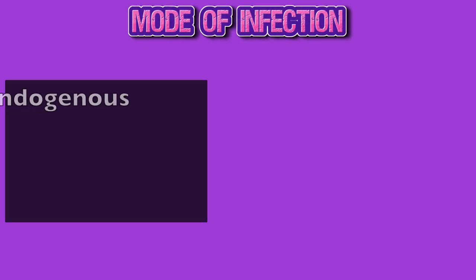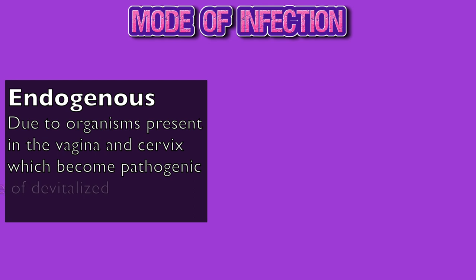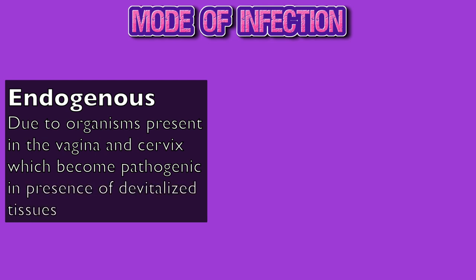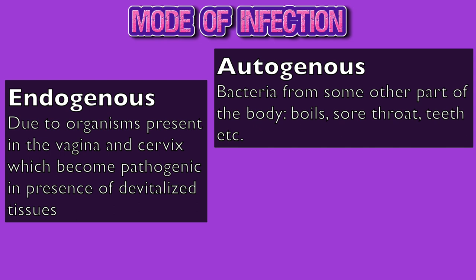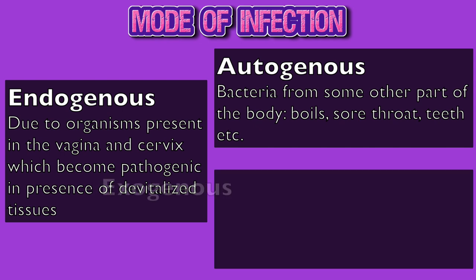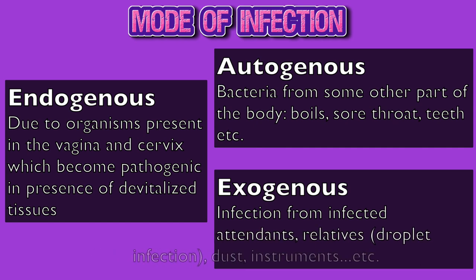There are 3 modes of puerperal sepsis. When the infection occurs due to organisms present in the vagina and cervix which become pathogenic in the presence of devitalized tissues, it is called endogenous infection. When the infection occurs from bacteria from other parts of the body such as skin boils, sore throat, and tooth infection, it is called autogenous infection. Exogenous infection is when it is introduced from the outside from unclean hands, unsterile instruments, foreign substances, and sexual activity.